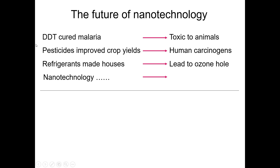For example, we have DDT, which has been utilized for treating malaria. Malaria has been treated with DDT, but it proved to be toxic to animals. It has pros and cons — it has the benefit of curing malaria, but at the same time it has been proven to be toxic to animals.